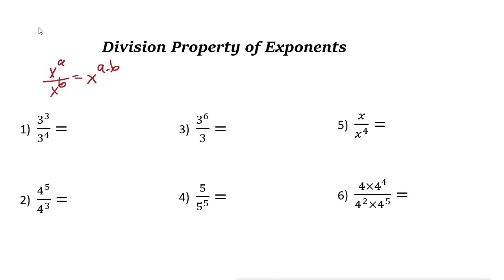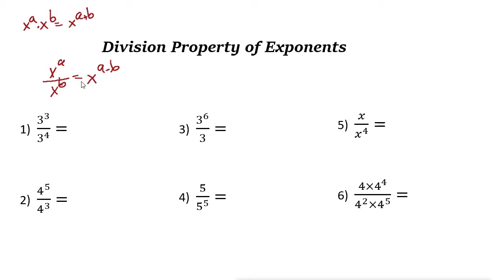Remember that for the multiplication property of exponents, if you have x to the power of a times x to the power of b, you add the powers — it becomes x to the power of a plus b. For division, we subtract the powers.